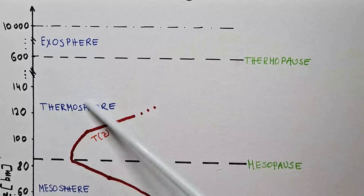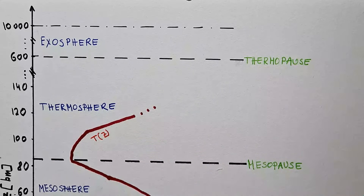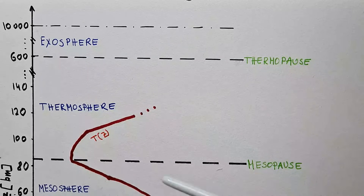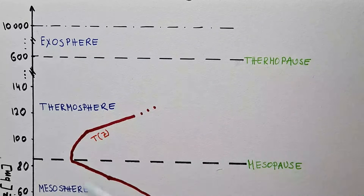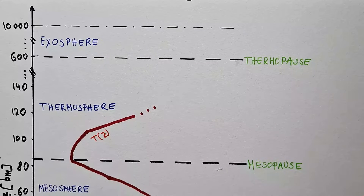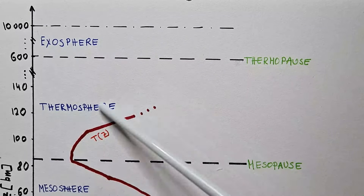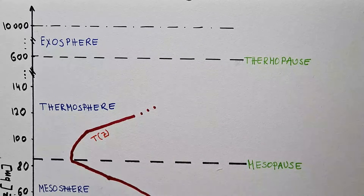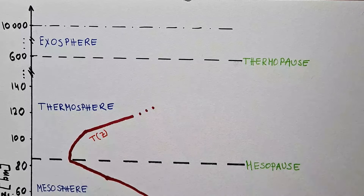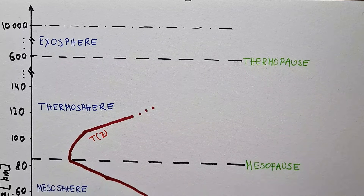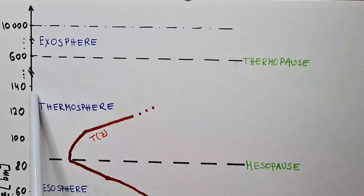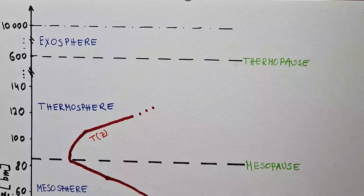The ionosphere is part of the thermosphere. Solar radiation ionizes gas molecules and atoms, creating positive ions and free electrons. The flow of these electrons constitutes a current, and these free ions also bounce off radio waves — which is why this layer is so important for radio broadcasting, especially AM radio stations. Aurora borealis also occurs in the thermosphere — one of the most spectacular visual phenomena in our atmosphere — and I will discuss that in a separate video on Earth's magnetic effects. The International Space Station orbits in the thermosphere at a height between 320 and 380 kilometers above Earth.